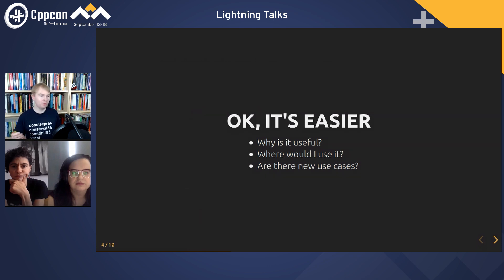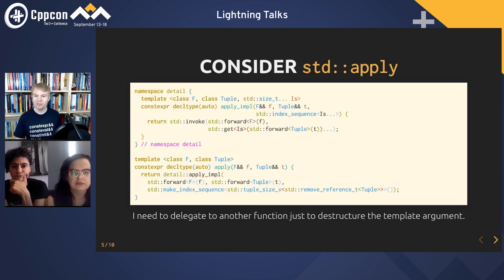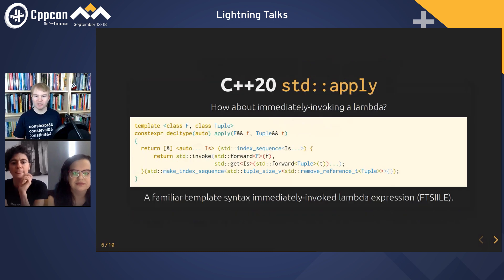So where would we use it? Consider something like std::apply. This is from cppreference.com — a sample implementation of std::apply. We can see that the main body at the bottom just makes the index sequence and then delegates to a helper function. With familiar template syntax lambdas, we can collapse these two functions and make an immediately invoked familiar template syntax lambda, or FTS IILE, because we like long acronyms in C++.